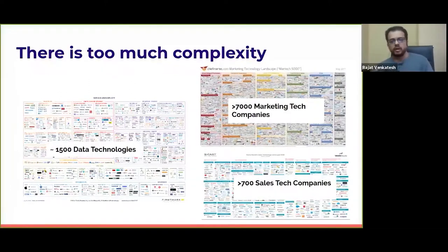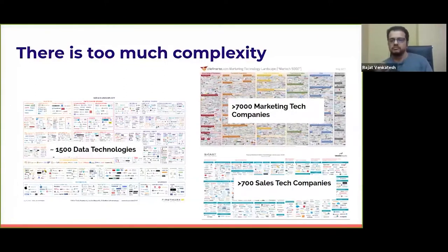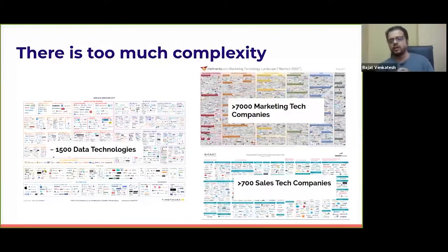A similar trend exists for marketing technology and sales technology companies, which ultimately rely on data processing and data storage technologies underneath. With increasing complexity, security becomes a huge problem, and if you don't have enough security, you are compromising on privacy and compliance.